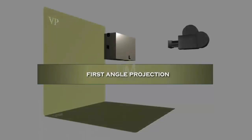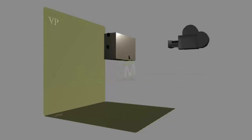First angle projection. In this video we will see the complete concept of first angle projection. In this projection method, the object is placed in the first quadrant. The setup is observer, object, followed by plane.